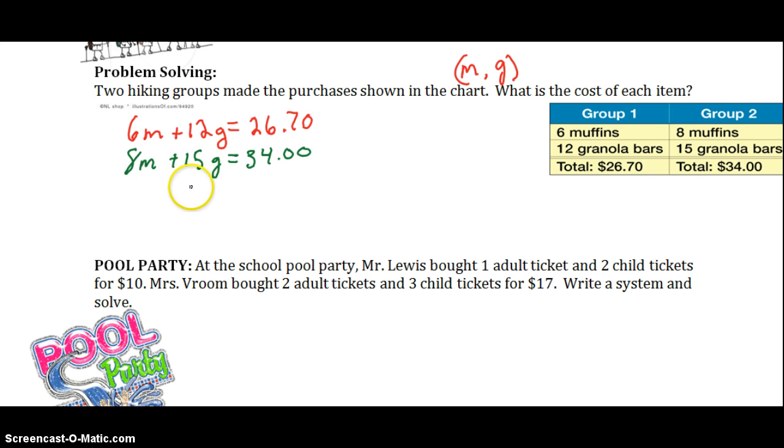Okay, so we just used m for muffins and g for granola bars, and then we can use any of our methods to solve this system of equations. I think the best one to use is going to be elimination by multiplication. Because if we multiply the first equation by a negative 4, and we multiply the second equation by a positive 3, then we're going to get a positive 24m down here and a negative 24m. So, those will cancel.